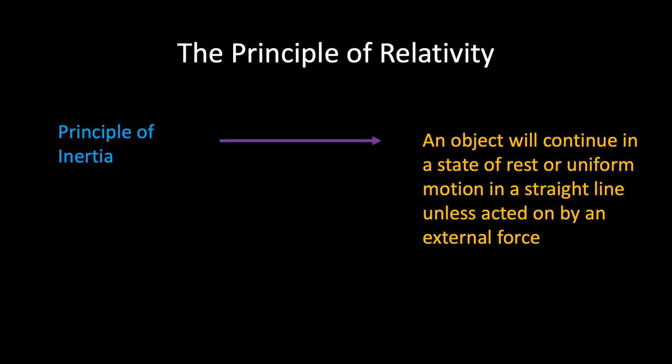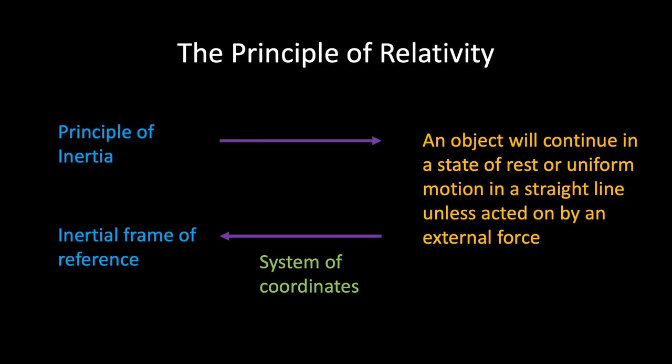This is called the principle of inertia. A frame of reference which is in a state of motion such that the principle of inertia holds relative to it is called an inertial frame of reference — you can think of it as a non-accelerating frame of reference. This is the reason Einstein's theory of special relativity is referred to as 'special': it only deals with inertial frames of reference, and it is these that we will focus on in the remainder of this video.